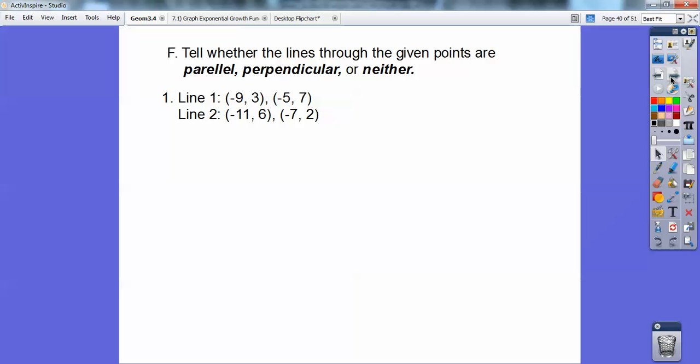Tell whether these lines are parallel or perpendicular or neither. I'm going to find the slope of line 1 here and then find the slope of line 2. If they're equal, they're parallel. If they're opposite reciprocals of each other, they're perpendicular. Otherwise, they're neither. So let's find the slope of line 1.